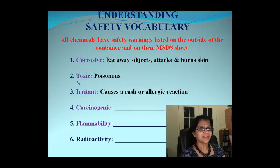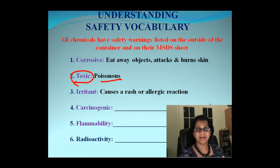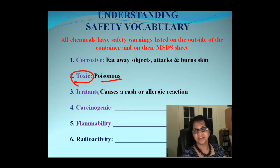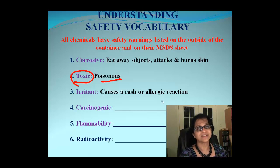The next one is toxic, and simply put, toxic means it's poisonous — those substances are always poisonous. The next one is irritant, and as the word suggests, it irritates — it causes irritation of the skin, such as a rash or some allergic reaction.